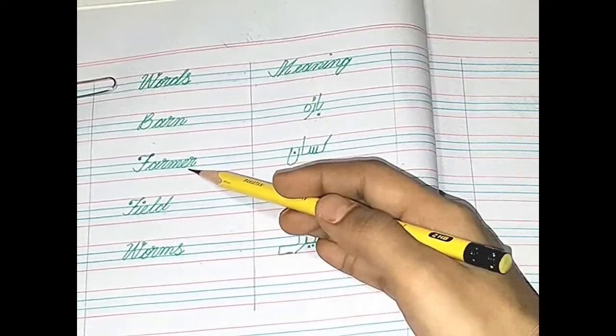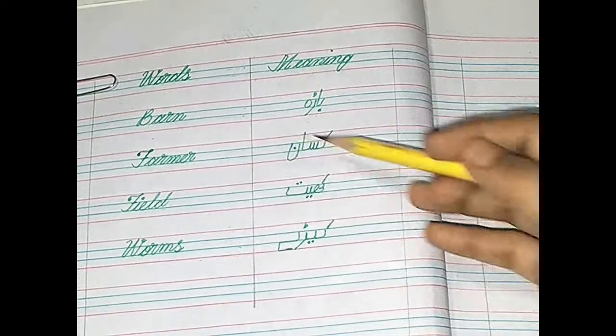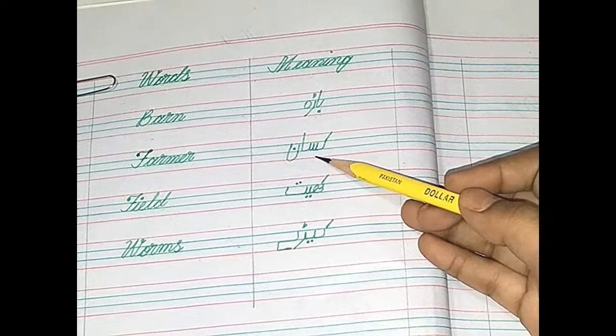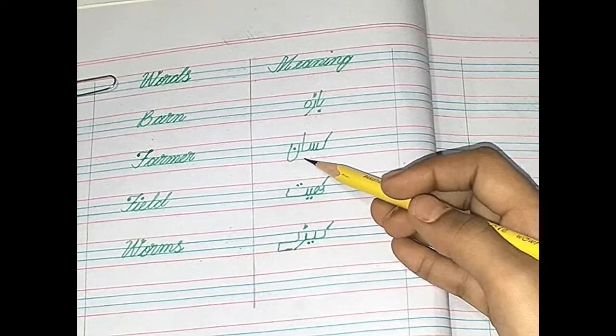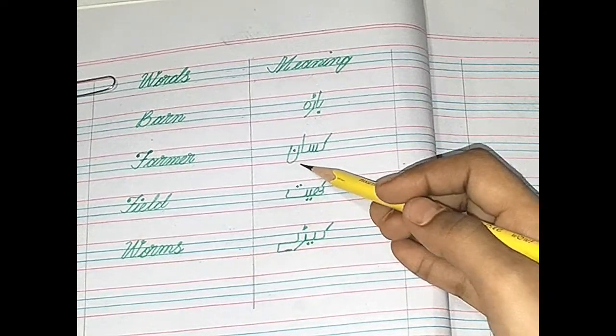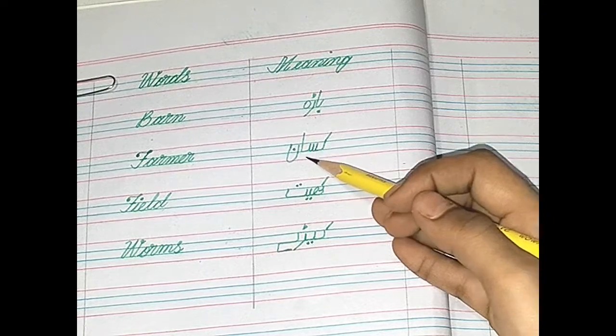Farmer. Farmer means Kisaan. Kaaf, seen, alif, noon — Kisaan.